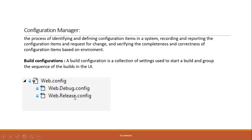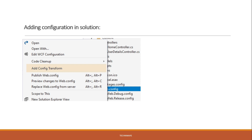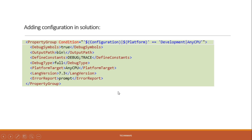This is the Configuration Manager in Visual Studio. To create a build configuration, we select 'New', and if we have an existing configuration we want to replicate, we set it to copy from that configuration. After doing this, the configuration will get created in the background, but it will not yet be injected into our solution. To inject it, we go into the web configuration and add a config transform.